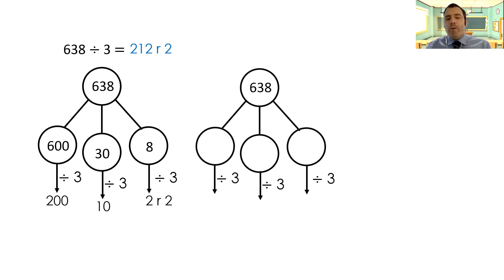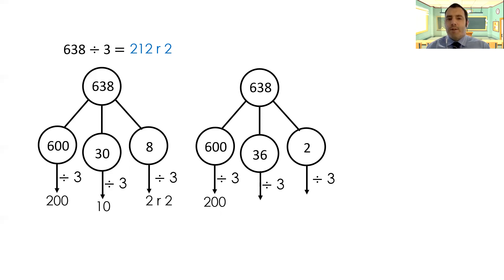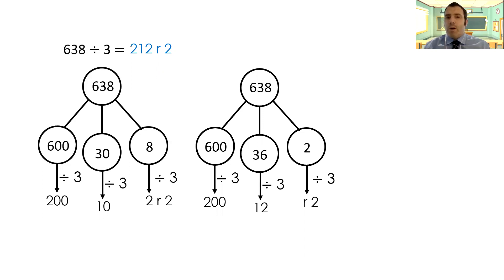Is there another way we could have done it? I'm going to show you this and then show the other one as well. I'm going to take 600 and complete the first step the same way. This time I'm going to take 36, because I know 36 is 12 threes. I get the same answer, and I know I can't divide 2 by 3 so that's a remainder. I've been flexible with how I've partitioned — I haven't rigidly stuck to taking 100s, 10s, and 1s. I've added 6 ones onto my tens because 36 is on the three times table, and that's left me with 2.